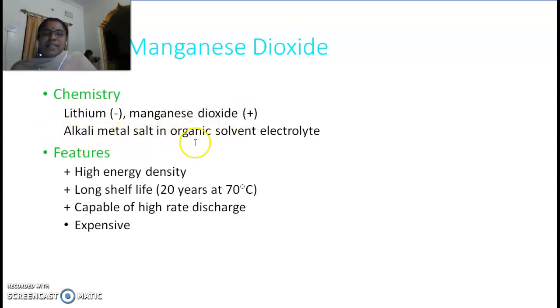The electrolyte is alkali metal salt in organic solvent. What are the features? It has high energy density, long shelf life—it can sustain up to at least 20 years, a little bit longer period. Temperature tolerance is also higher, up to 70 degrees Celsius. It's capable of high rate discharge, but it is expensive.